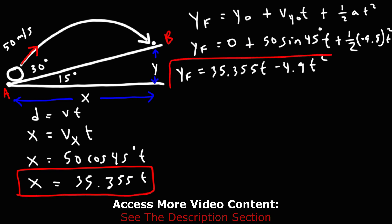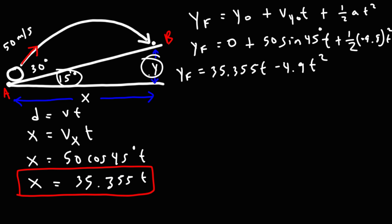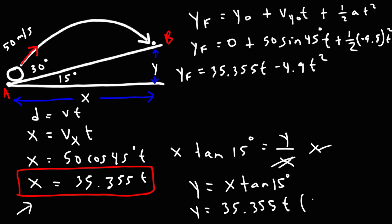And we have y in terms of t. Now, we need to find a way to connect x and y. And we could use trigonometry, SOHCAHTOA. Tangent of 15 degrees is going to equal the opposite side divided by the adjacent side. So tangent of 15 is y over x. Solving for y, we get that y is equal to x tangent 15. And x, we know it's 35.355t. And then times tangent 15. So let's go ahead and multiply these two numbers. So 35.355 times tangent of 15, we get that y is equal to 9.4733t.